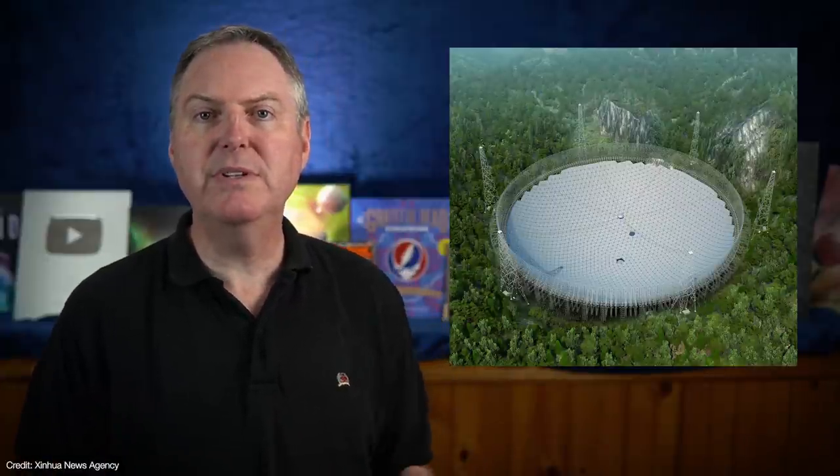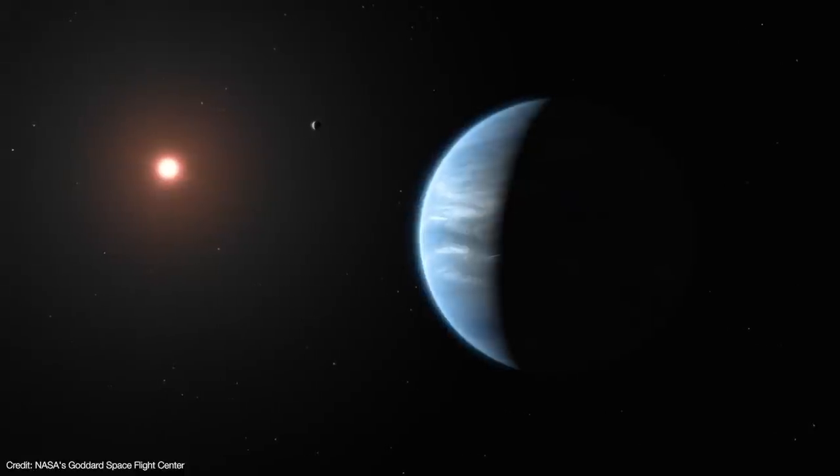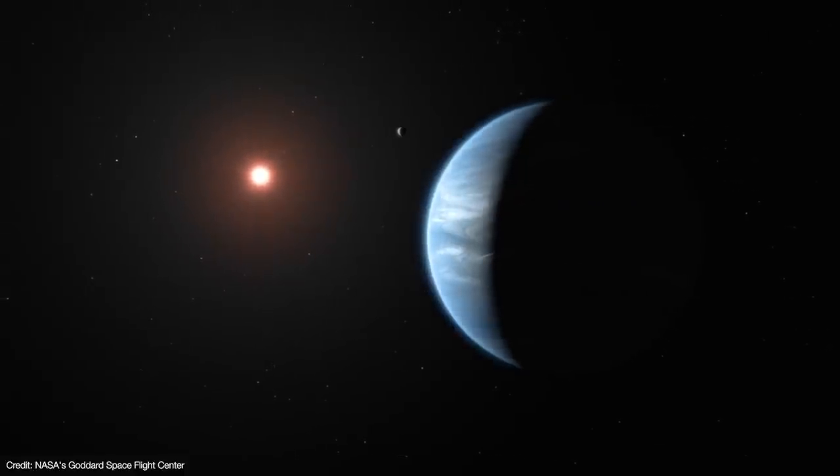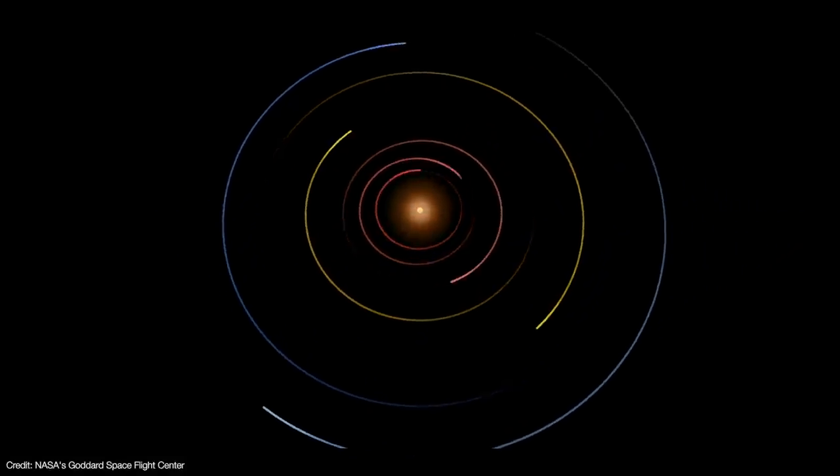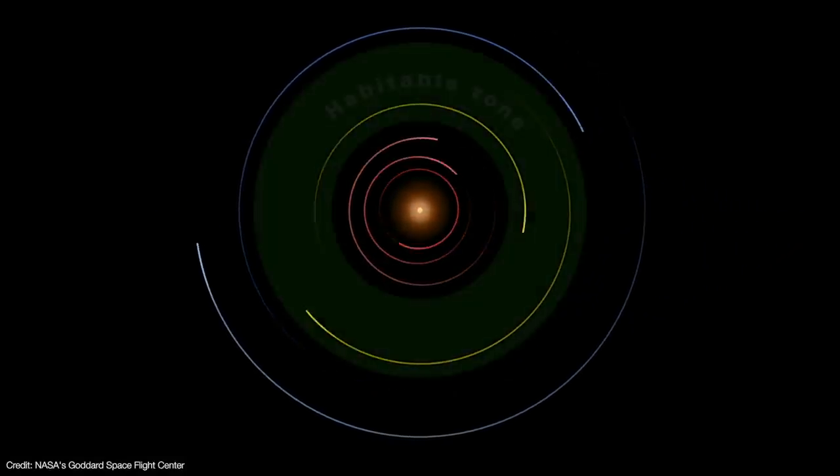To that end, an international team from China and the University of California Berkeley used FAST to carry out the first targeted SETI observations between 2020 and 2021. During that time, FAST looked at 33 exoplanetary systems, 29 of which host planets in their habitable zones.